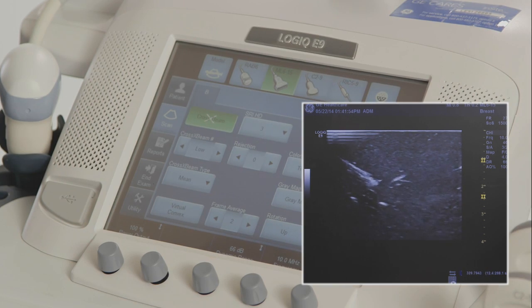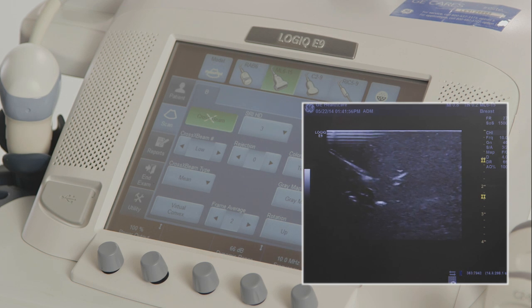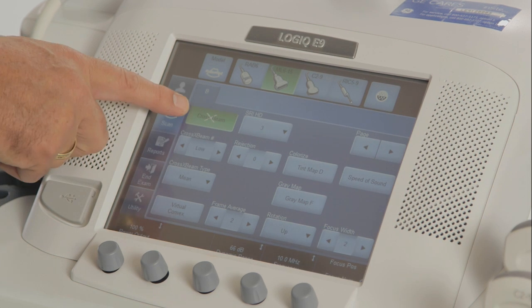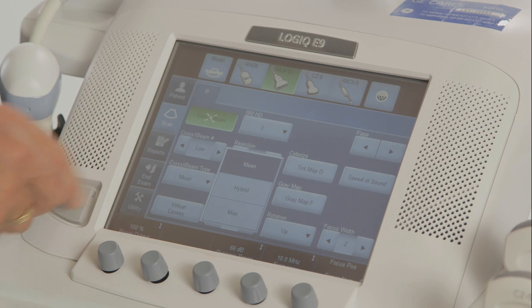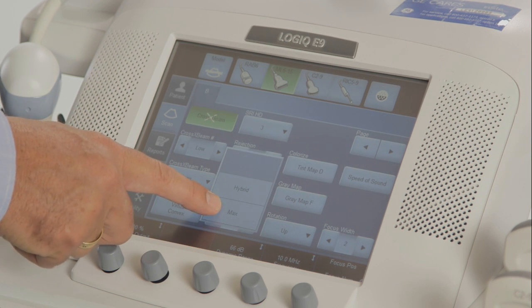If you need to have crossbeam active to visualize the lesion, you can change the crossbeam type from mean to max, which will give you priority to the maximum reflectors or the needle.